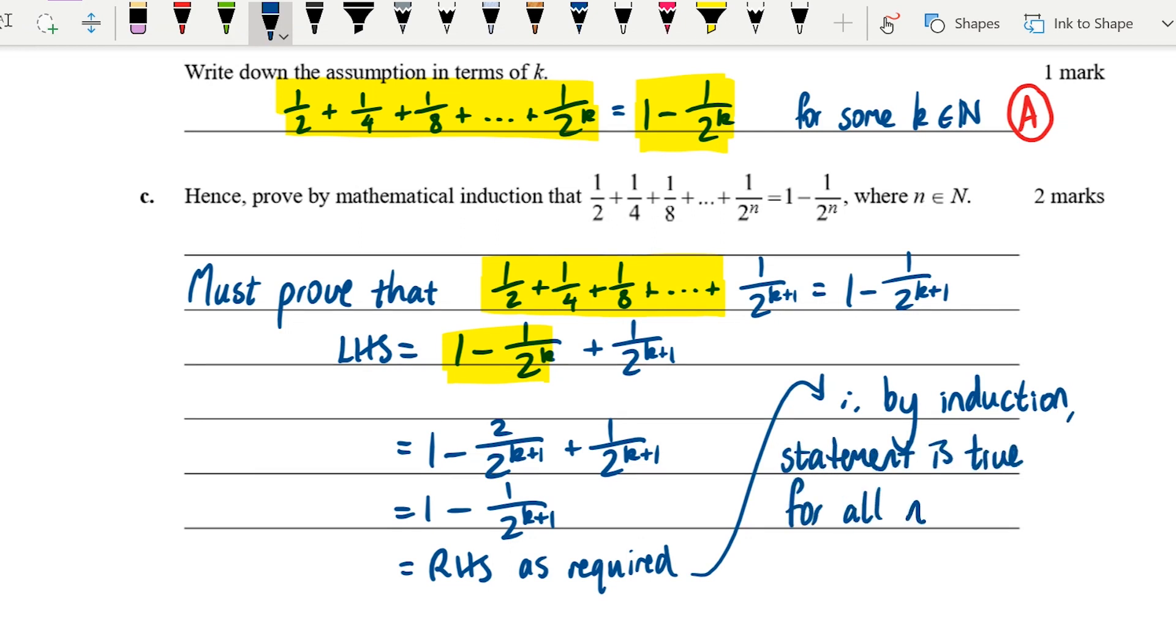I think that's quite a nice example that the VCAA have given in their sample questions. They've broken it up, the four marks into one, one and two. Even if the question in your exam is just a straight four mark question, it gives you an indication of how that might be marked: with one mark for the base case, a mark for the assumption perhaps and the setup for the proof for the next integer, and then a mark or two for the actual algebra and completing the proof.